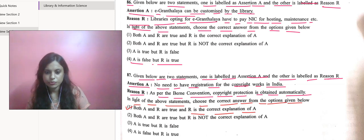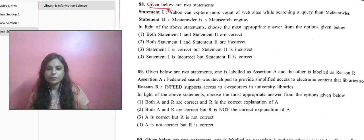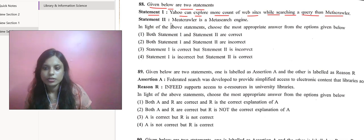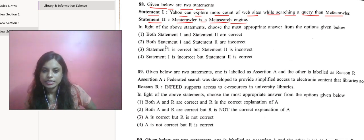Moving to the next question. Statement one says Yahoo can explore more count of websites while searching a query than Metacrawler. Statement two: Metacrawler is a meta search engine. Going with statement one, I would prefer to cross out this first statement because that is incorrect, but the second one is correct. So statement one is incorrect but statement two is correct.